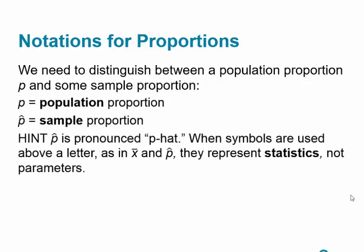Some notation: P is simply the population proportion. For example, if we ask what proportion of Americans support legalizing marijuana, and we ask all adults in the United States, that would be the population proportion — let's say 50%. If we take a sample of 2,500 people and find the proportion of those who support legalizing marijuana, that would be p-hat.